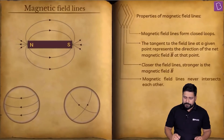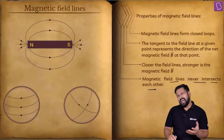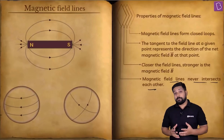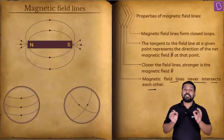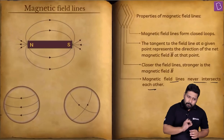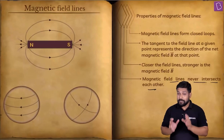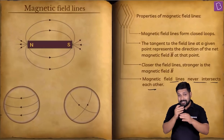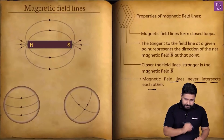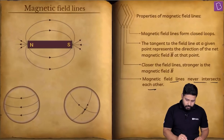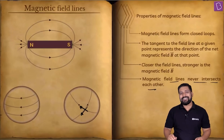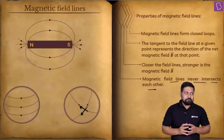The next property: magnetic field lines never intersect each other. The reason is simple — at any given point, if you draw a tangent to the curve, you get the direction of the magnetic field at that point. If magnetic field lines were to intersect, there would be two tangents at that point — one in this direction and another in this direction. A single quantity cannot have two directions, which is why magnetic field lines can never intersect.